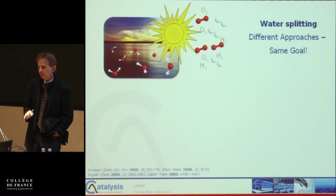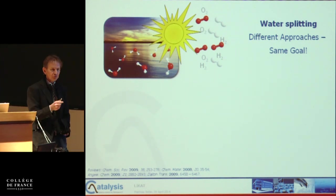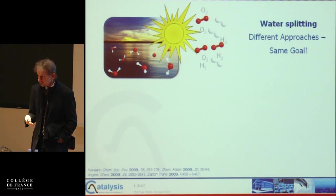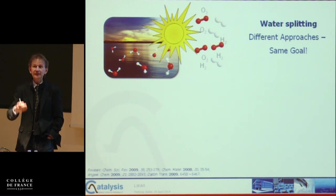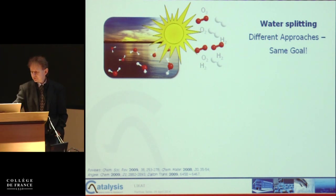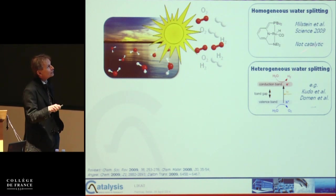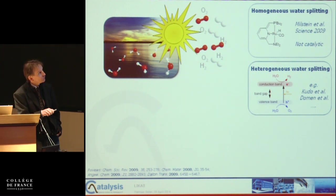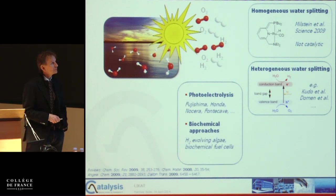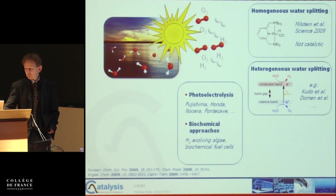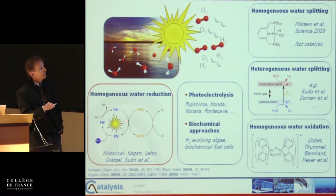So far I have shown you very basic work, and you might ask what this has to do with carbon dioxide — we will come to that in a minute. I want to show you that from model studies, at a certain point you have to go to real applications — meaning developing a device that can be used at least on a small scale practically. There are various approaches for photocatalytic water splitting: model studies, heterogeneous catalysis using heterogeneous materials, photoelectrolysis as mentioned in Mark's talk, biochemical approaches, and homogeneous approaches on the two half-reactions — proton reduction and water oxidation.